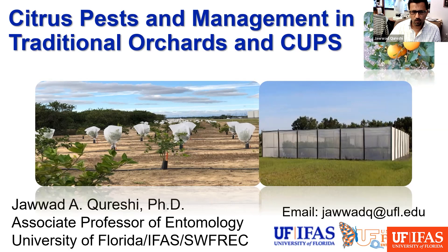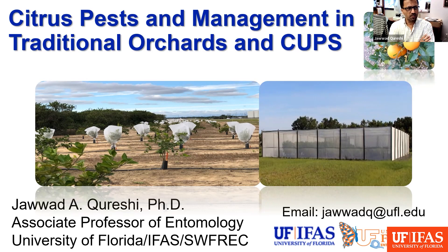However, with the discovery of the insect named Asian citrus psyllid in 1998, and the disease that it vectors — Huanglongbing or citrus greening — which was identified in 2005, the situation changed to the point that now it is even not possible to grow a citrus tree into production phase without getting infected with Huanglongbing disease.